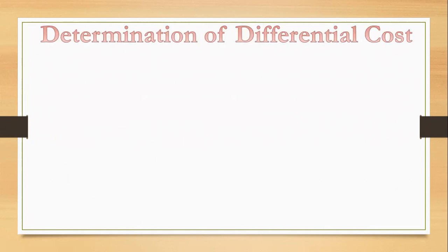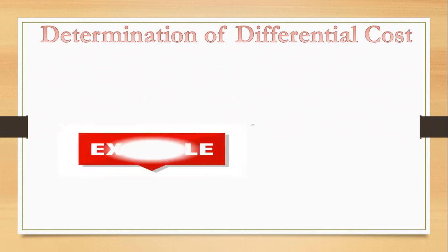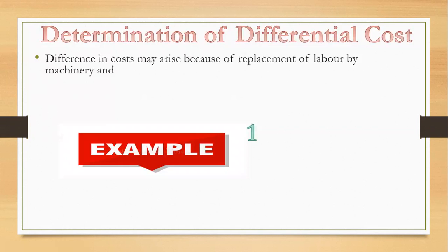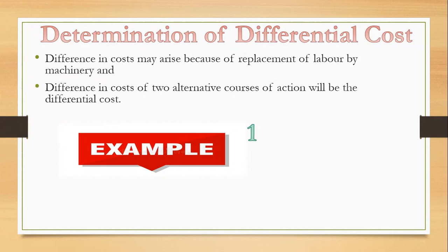How do we determine the differential cost? Let's look at an example. Difference in cost may arise because of replacement of labor by machinery and difference in cost of two alternatives of course of action will be the differential cost. Differential cost may be increase or decrease in cost.